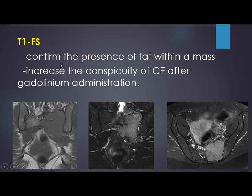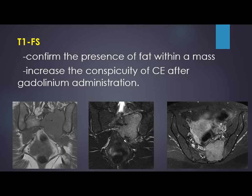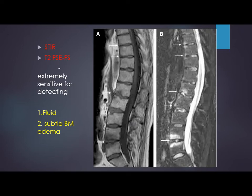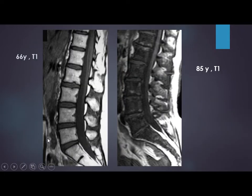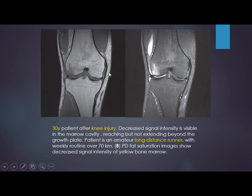T1 fat suppression: what is the importance of fat suppression in bone marrow? First, it confirms the presence of fat within a mass — if it suppresses, it contains fat. Second, it increases the conspicuity of contrast enhancement after gadolinium administration. This is a case of plasmacytoma — solitary multiple myeloma. Comparing T1, STIR, T1 fat suppression pre-contrast, and T1 fat suppression post-contrast demonstrates how the lesion is delineated. STIR and T2 fat suppression are extremely sensitive for detecting fluid and subtle bone marrow edema.